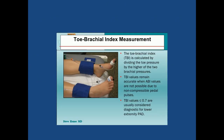The toe-brachial index is an alternative for patients with non-compressible arteries in whom the ankle-brachial index may be falsely supernormal despite occlusive disease. It involves measuring occlusive pressure at the toes divided by systolic pressure at the brachial artery. A value of less than 0.7 is considered diagnostic for lower extremity peripheral arterial disease.